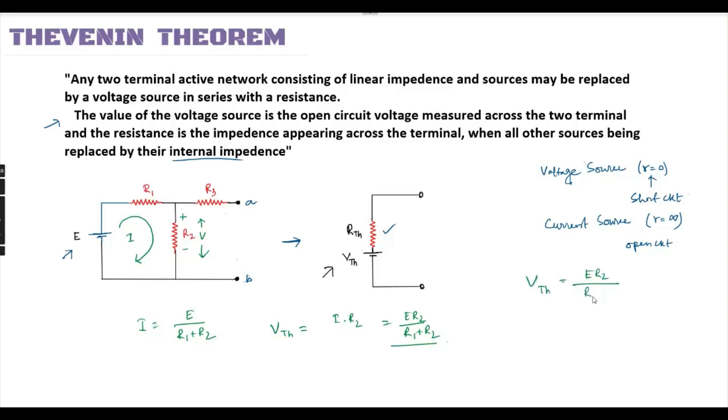So VTH equals E R2 by R1 plus R2, and RTH equals R1 R2 by R1 plus R2 plus R3. We have found the Thevenin voltage and Thevenin resistance.